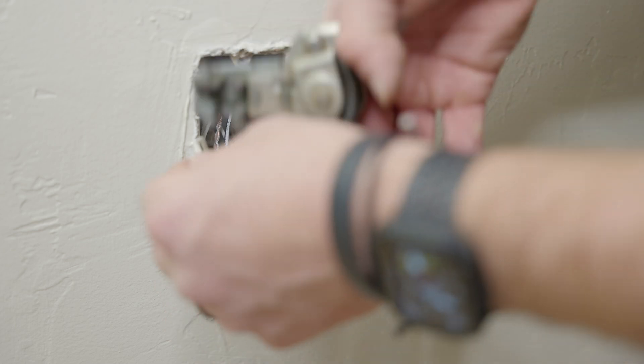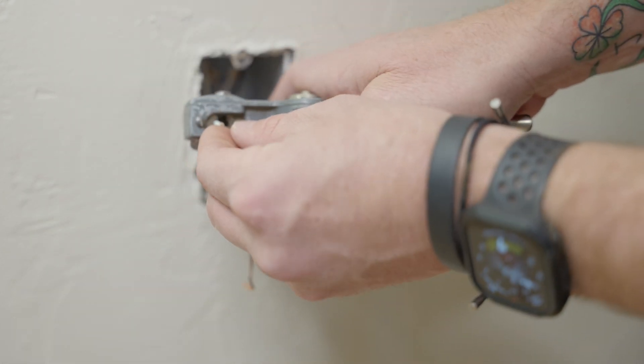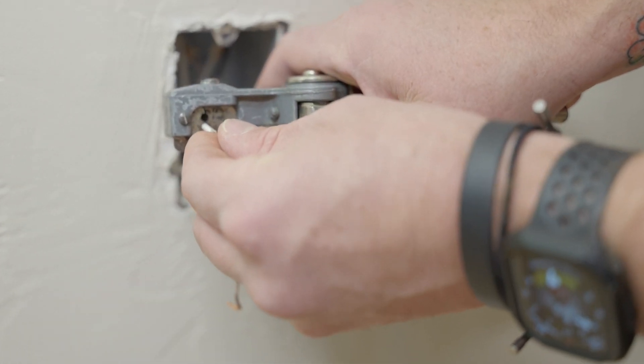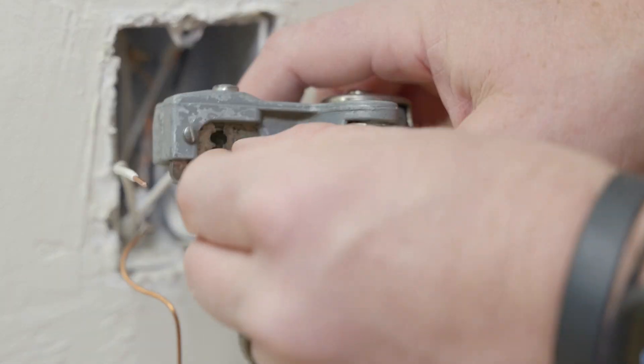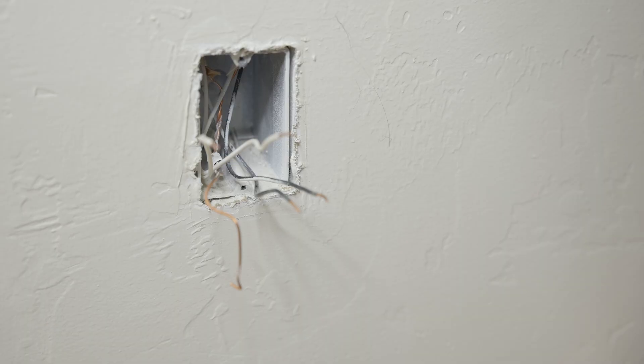So now that our wires are removed we need to re-strip them out. Now it's about three quarters of an inch on each wire. All of our wires are stripped and ready to go on to the new USB outlet.